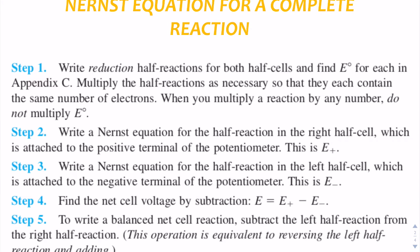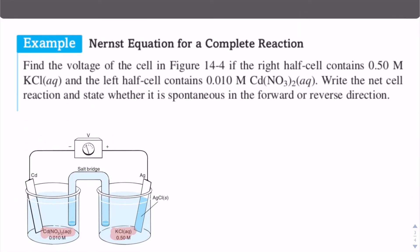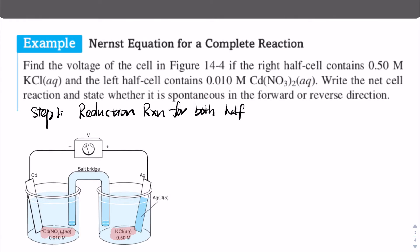The first step is to write reduction half-reactions for both half cells. We know that oxidation occurs in the left half cell and reduction occurs in the right half cell. Since all values for reduction potential are given as reduction potentials for all half-reactions, even though oxidation happens on the left side, we'll write it out and then reverse it into reduction format.